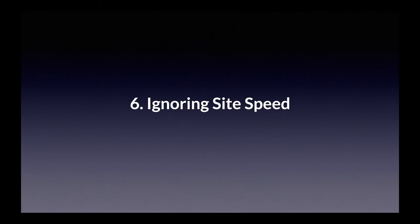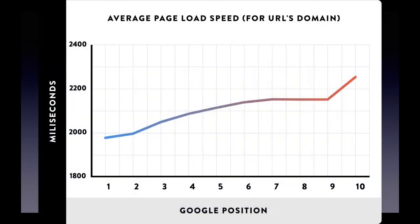SEO mistake number six: ignoring site speed. It's not often that Google actually tells us that something is a ranking factor, but that's the case with site speed. With the July 2018 speed update, Google put all websites on notice that slow websites would not rank as high as faster websites. If your pages take more than two seconds to load, your rankings will be suffering.